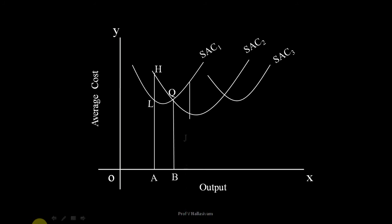Draw the line CJ. Note, point J is on SAC1.